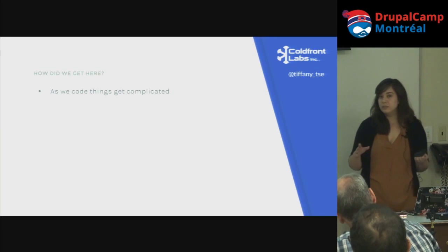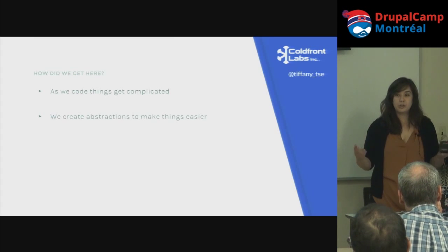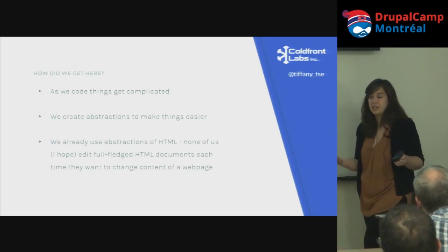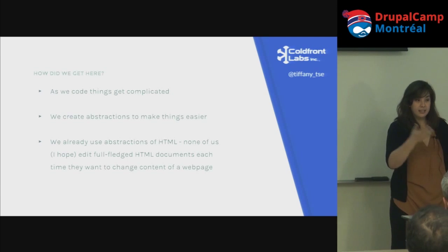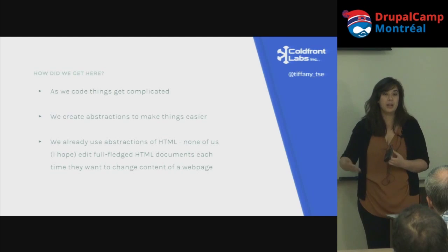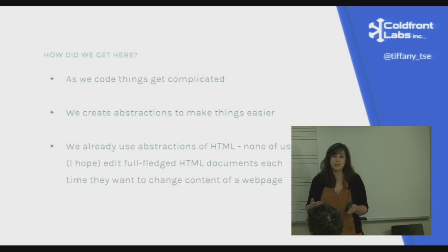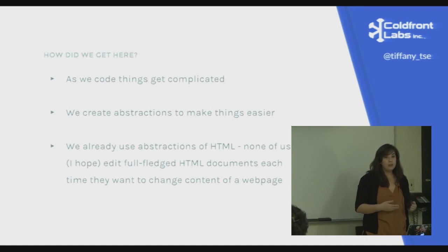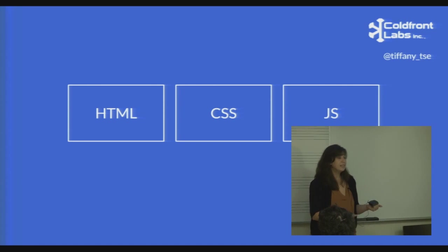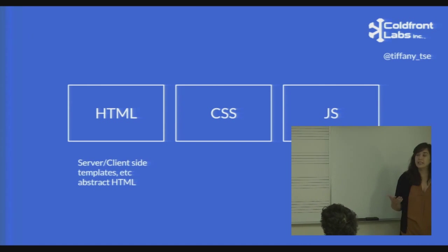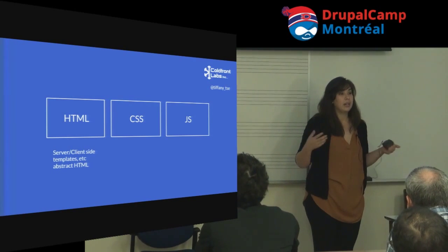How did we get here? As we code and as our sites and content management systems get more complicated, we have created abstractions to make things easier. We already use abstractions of HTML — Drupal uses PHP as a server-side language, which is an abstraction of HTML. None of us write or go into full HTML files to change contact information on a page anymore — most people use some kind of abstraction.